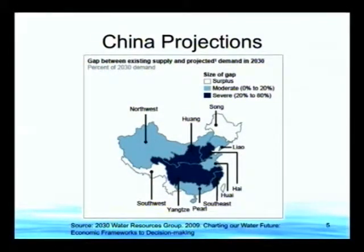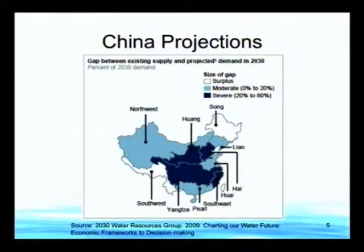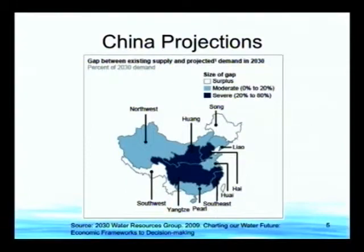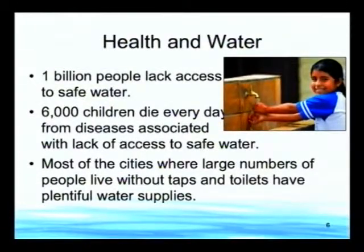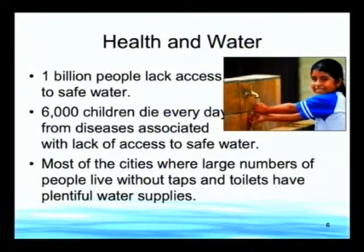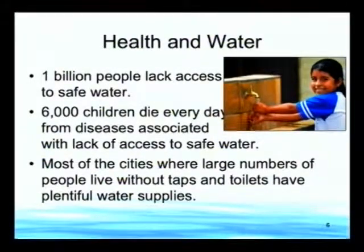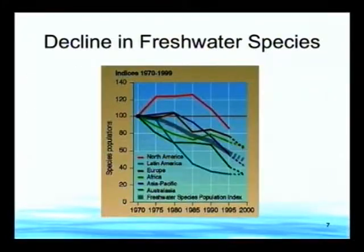China was examined closely in terms of particular river basins, and you can see on the map that blue areas show a 20 to 80% gap between existing supply and projected demand. The study examines levers and different ways that gap can be filled — mostly focused on demand and supply side approaches. On health and water: approximately 1 billion people lack access to safe water, and approximately 6,000 children die every day from waterborne diseases. It isn't only a matter of availability — many live where water is plentiful but lack taps and toilets.